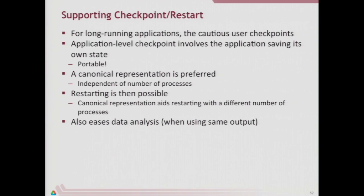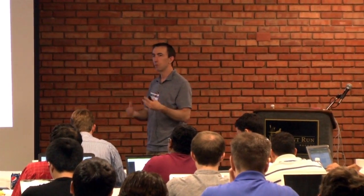We like to write things out in some sort of portable fashion. Portability is relative — maybe you just want to be able to read from a different number of processes than you wrote from, or you need to read it on a platform with a different endianness. One aspect of portability is what we call a canonical representation: a global representation of the data independent of the number of processes. Often that means writing out an array in global order, not in some partitioned order.